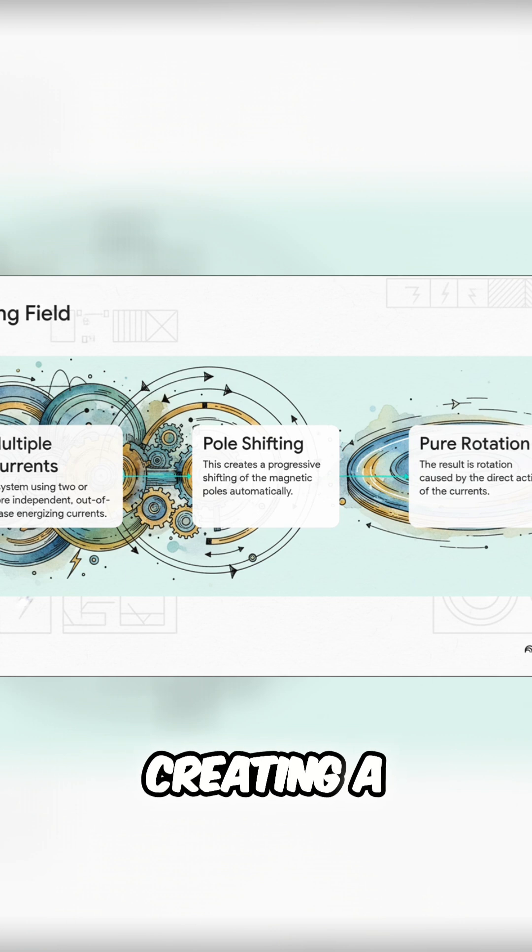And the result, in step 3, is this seamless rotating magnetic field, a literal whirlwind of energy created with no moving parts at all. The rotor inside the motor just gets swept up in the spin. It was absolutely genius.